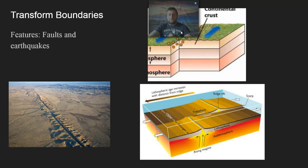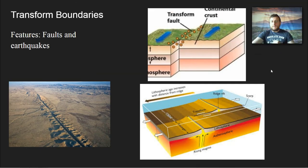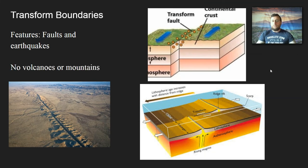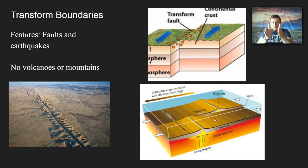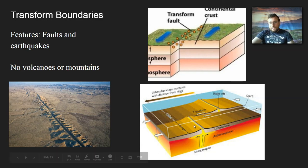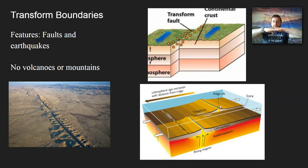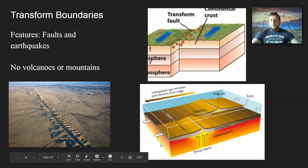The last type of plate boundary is the transform boundary. It's a little easier because there are no volcanoes and no mountains — all you have is two plates sliding past each other, causing faults and earthquakes, which are common to all plates. This can happen in the continent or in the ocean. When it happens in the ocean, it can actually crack a mid-ocean ridge in half. You can tell a transform boundary was there because ridges that used to be lined up actually got split and carried to the side, creating two separate series of spreading ocean in between.